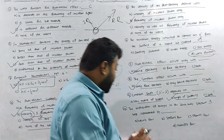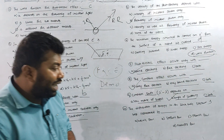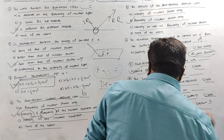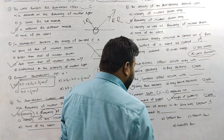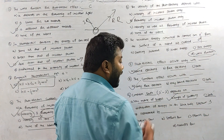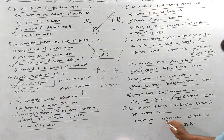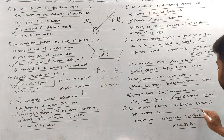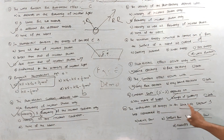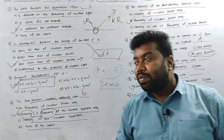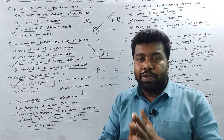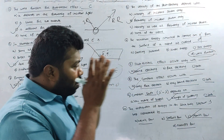The distribution of energy in the black body spectrum is best represented by Planck's law — not Wien's law, Stefan's law, or Kirchhoff's law. Planck's law is the best representation of the distribution of energy in the black body spectrum. This is a simple concept you have to learn.